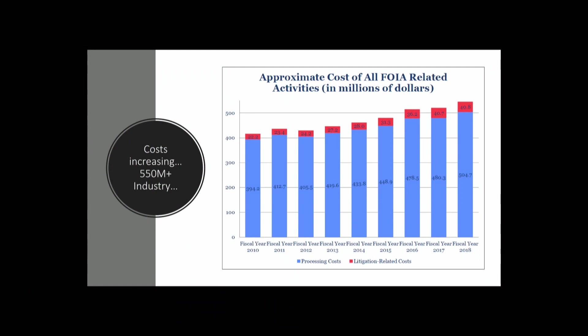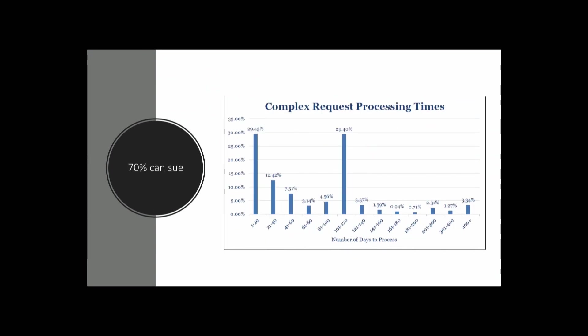Let's talk about this in terms of dollars. FOIA right now is a $550 million a year industry at a minimum. This doesn't even begin to take into account litigation costs, processing costs, and the costs of consulting with program offices about what to hold back or release. We have 20 days by statute to get these cases out. 70% of the cases in FY18 didn't get out in 20 days — meaning 70% of the people that sent in complex requests can sue us. If you've ever been involved in litigation, you understand quickly what this can do to a federal agency and why the need for technology improvements in this field is so very acute.